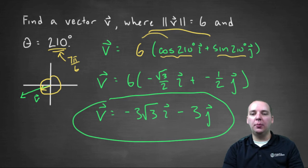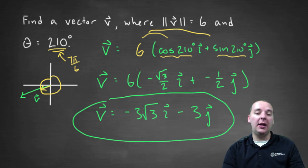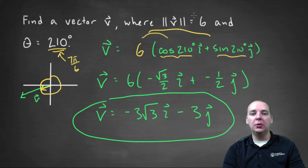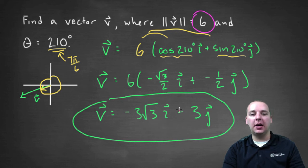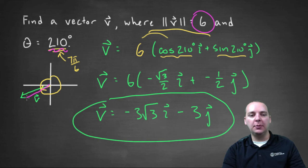This answer has two important properties. Number one, if you take its magnitude you would get six. And the angle of elevation it makes with the positive x-axis is two hundred and ten degrees, because it points in this direction.